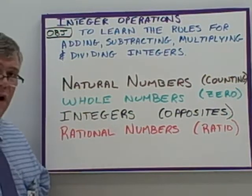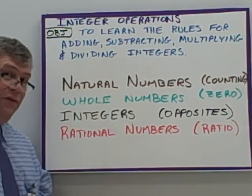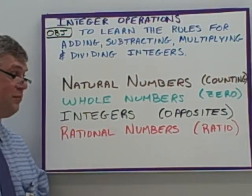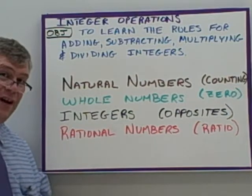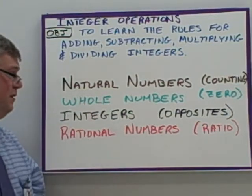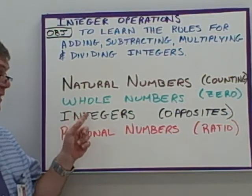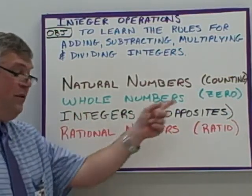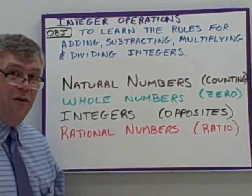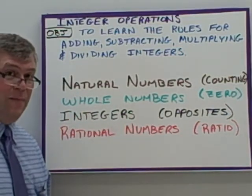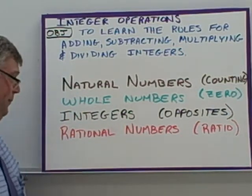Whole numbers are all the natural numbers — those counting numbers — plus the number zero, which makes a whole. Whole numbers are all the natural numbers including the number zero.